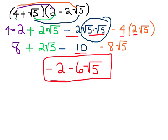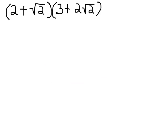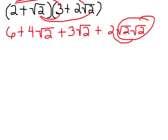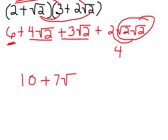And this is as simple a form as I can get that. Let's do another one. So 2 times 3 is 6. 2 times 2 square root of 2 is 4 square root of 2. And then our inside terms: 3 times the square root of 2 is 3 square root of 2. And then square root of 2 times 2 times the square root of 2 — that's 2 times 2, which is 4. Now this 4 can be combined with this 6 for a total of 10, and 4 square root of 2 and 3 square root of 2 gives 7 square root of 2.